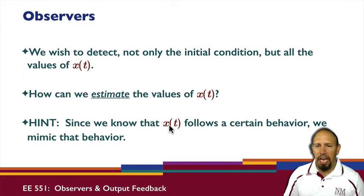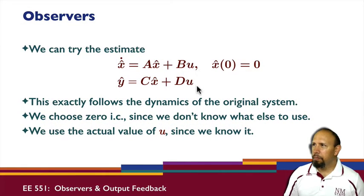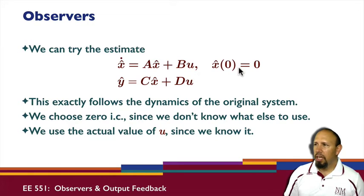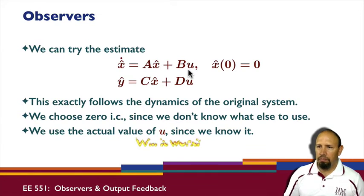Since we know x follows a certain behavior, we can always mimic that behavior. Here's a first stab at an observer or estimator. The hat indicates an estimate, so x-hat-dot - this is the same set of differential equations with the same A, B, C, D matrices as before. We choose zero initial conditions because we don't know what else to use. As long as we know A, B, C, and D we know exactly how the system responds, and we know the actual value of u that's going to be applied.